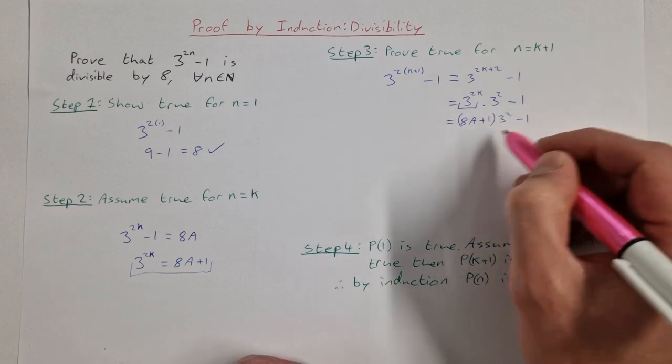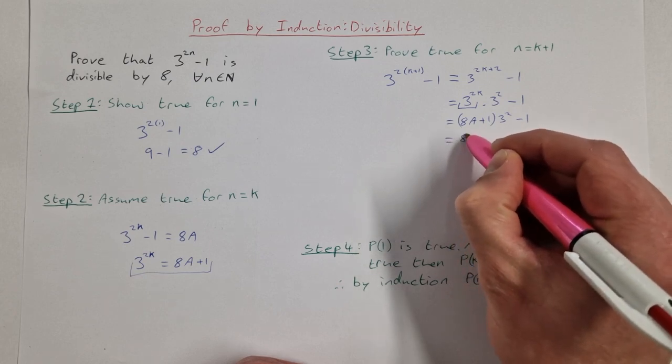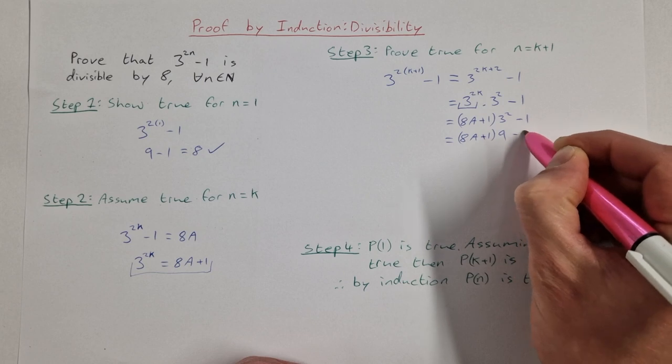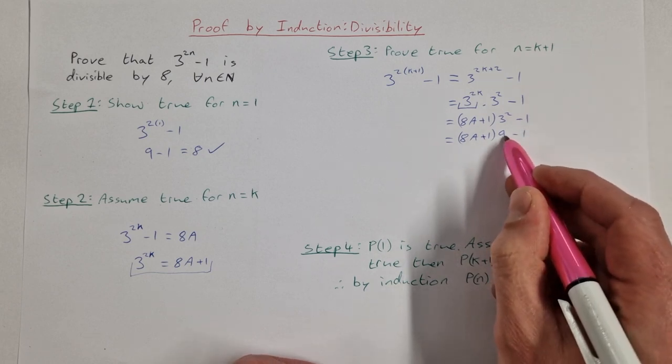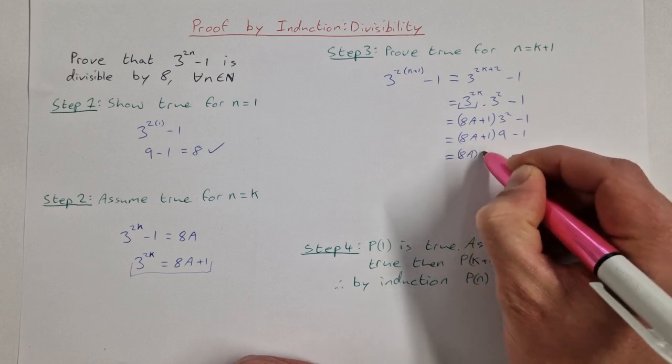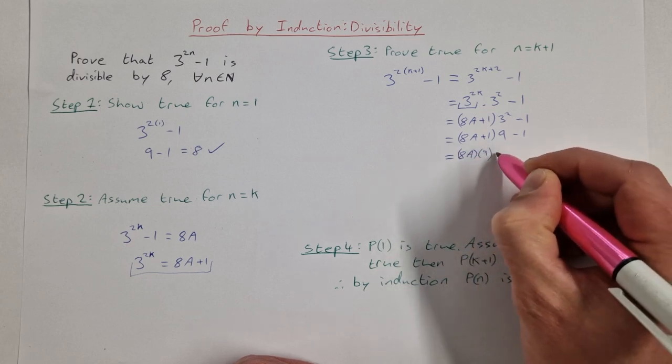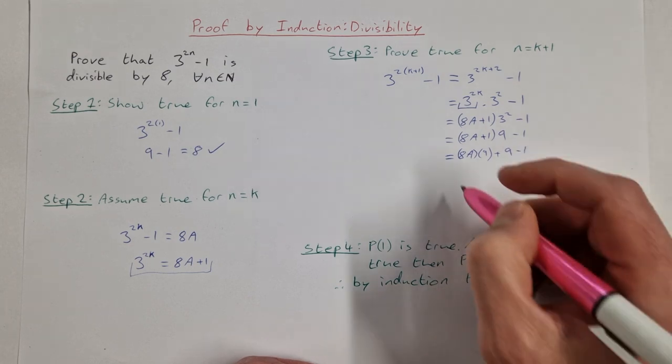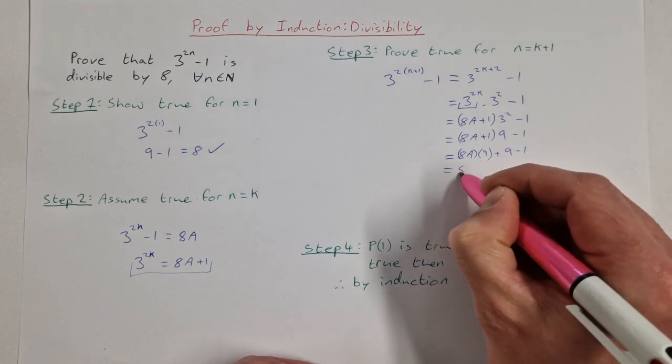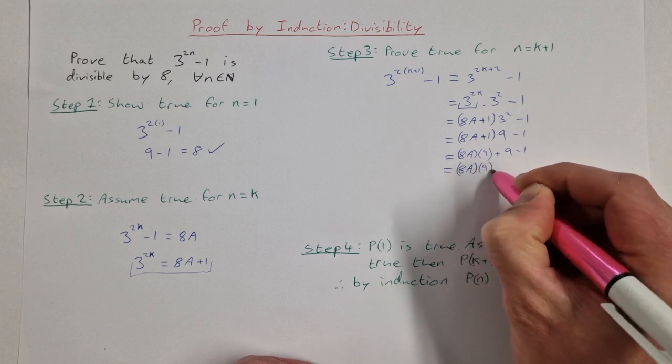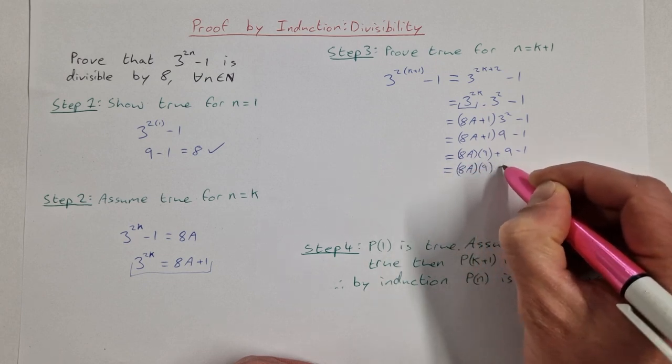I can continue to manipulate this and say that's equal to (8a + 1) times 9 minus 1. I can multiply in my 9 to say 8a multiplied by 9 plus 1 by 9 is 9, minus 1. Nearly there, that's 8a times 9 plus 9 minus 1, which is 8.